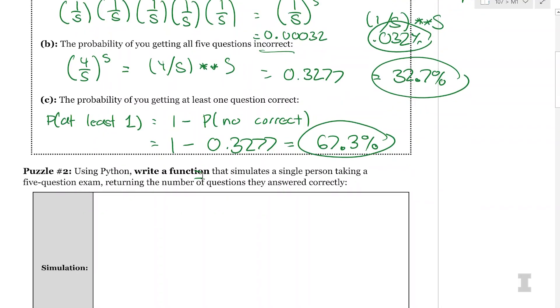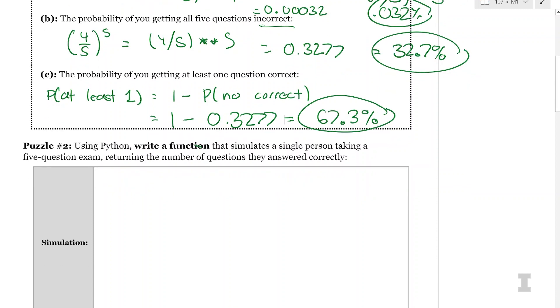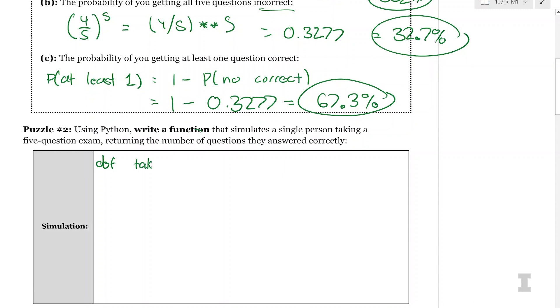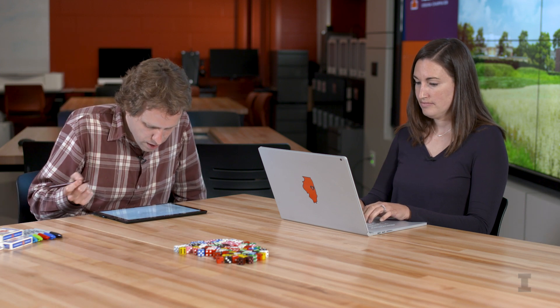So now we can go ahead and have a simulation of this data that we just did this analysis of. So puzzle two, write a Python function that simulates a single person taking a five question exam returning the number of questions that answered correctly. So we're going to write a function. So I'm going to say def take exam.